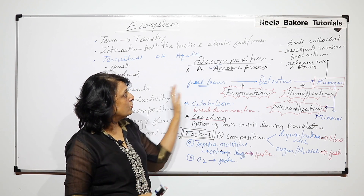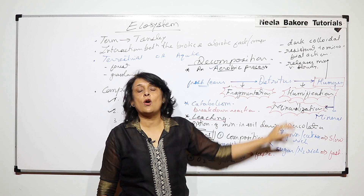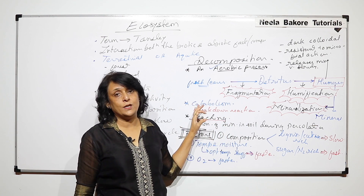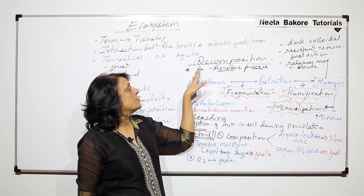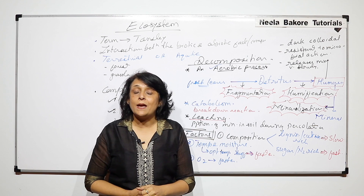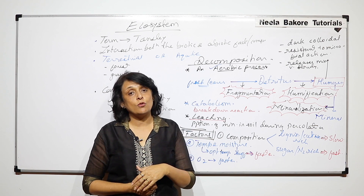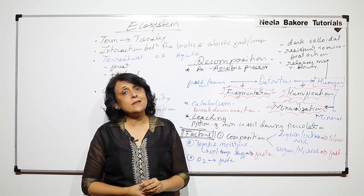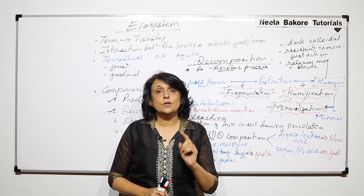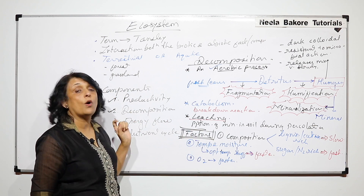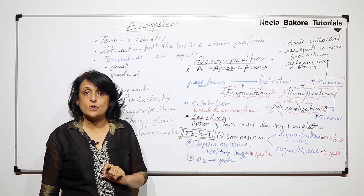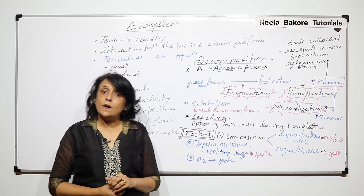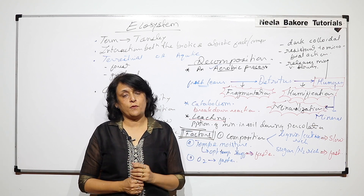The whole decomposition process takes place with the help of microbes — those microbes are known as the decomposers. So this is the second component of our ecosystem. In the next part we will talk about the third component, that is energy flow.